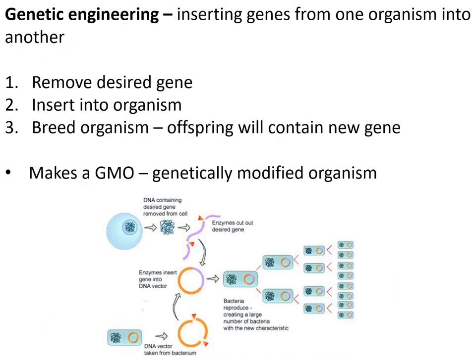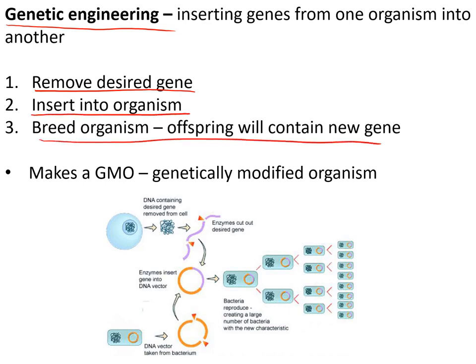You can also change populations by genetic engineering — taking genes from one organism and inserting them into another to create an organism with new characteristics. You remove the desired gene from the source organism, insert it into the target organism, then breed the organism on so all offspring contain that new gene with that new characteristic.